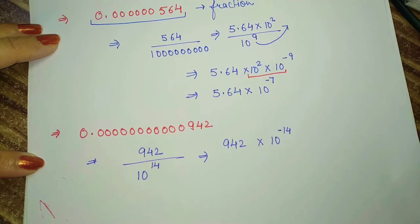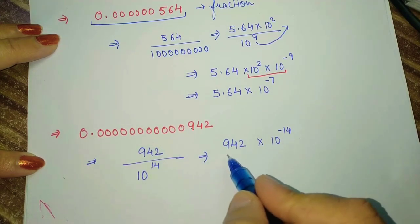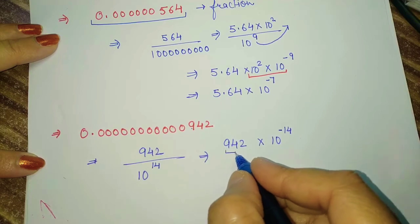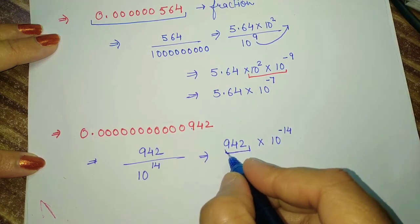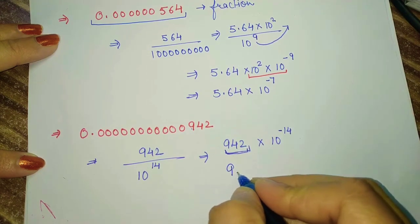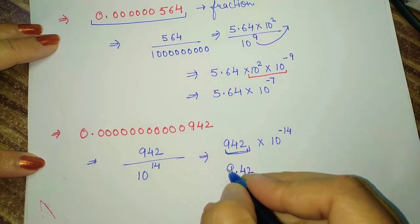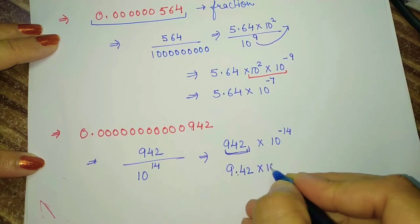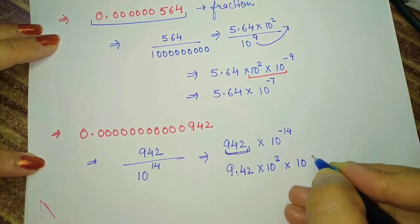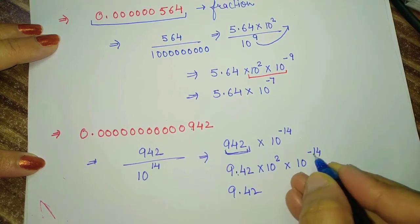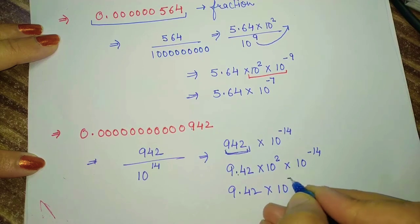After writing as a numerator, we convert its power to negative. But this number is still not in standard form. Why? Because this number consists of 2 more digits — it is not a single-digit number before the decimal. So we write 9.42, keeping only the first digit and putting the decimal after it. Here it becomes 10 to the power 2 multiplied by 10 to the power minus 14. So 9.42 × 10 raised to the power minus 12.